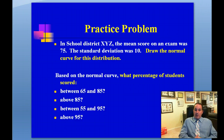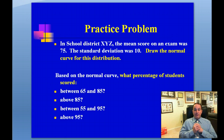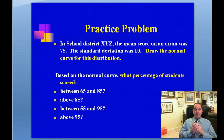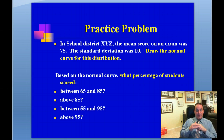Let's do a practice problem. Suppose in school district XYZ, the mean score on an exam was 75 and the standard deviation is 10. Draw the normal curve for this distribution and then, based on the curve, determine what percentage of students scored between 65 and 85, above 85, between 55 and 95, and above 95. At this time, I'll ask you to stop the video, do the practice problem, and once you are done, turn the video back on and go on to the next slide.